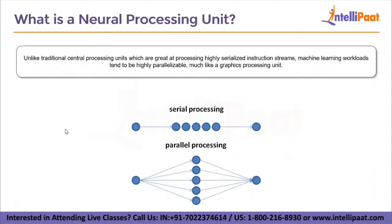Unlike traditional central processing units which are great at processing serialized instruction streams, machine learning workloads tend to be highly parallelizable, much like a graphics processing unit. Moreover, unlike a GPU, NPUs can benefit from vastly simpler logic because their workloads tend to exhibit high irregularity in the computational patterns of deep neural networks. For these reasons, many custom-designed dedicated neural processors have been developed.